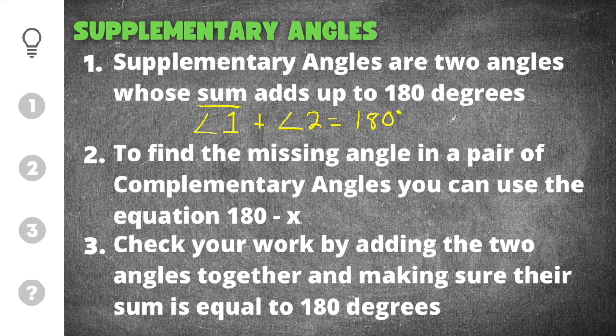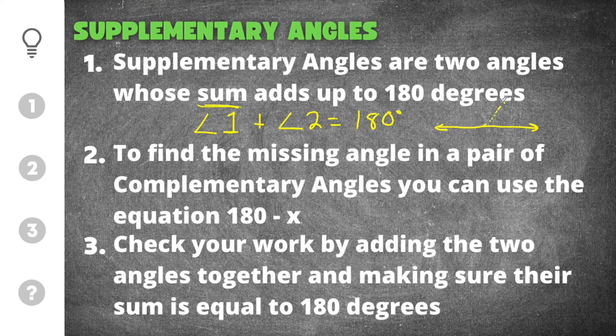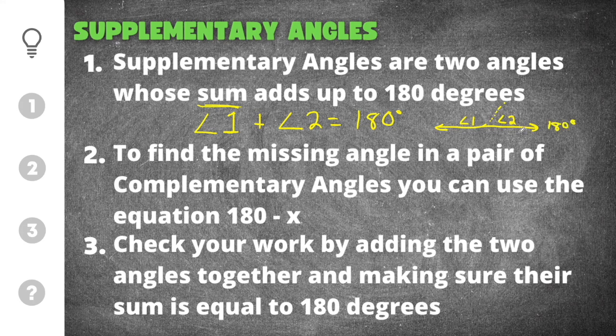Typically that means that these two angles will form a straight line. So if you can just imagine I draw a straight line here. Let me just draw a little vector to bisect it. We have let's say angle 1 here and angle 2 here. These two angles together will equal 180 degrees which is our straight line.